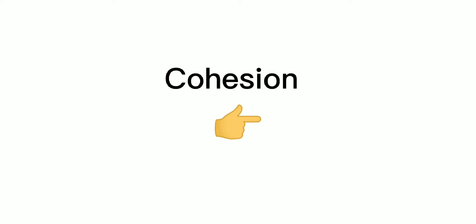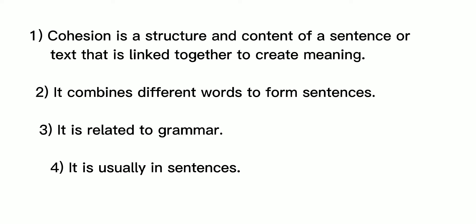Let's start with cohesion. 1. Cohesion is a structure and content of a sentence or text that is linked together to create meaning. 2. It combines different words to form sentences. 3. It is related to grammar. 4. It is usually in sentences.